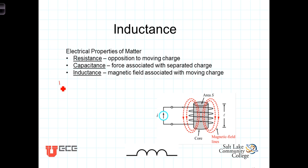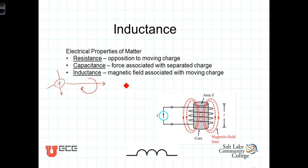A stationary electric charge has an electric field. But when we move that electric charge, when you cause it to move, there is a magnetic field created. The direction of that magnetic field can be determined by putting the right-hand thumb in the direction that the charge is moving, and then your fingers curling around will give you the direction of the magnetic field. So in this case it would be something like that if the charge were going in that direction.